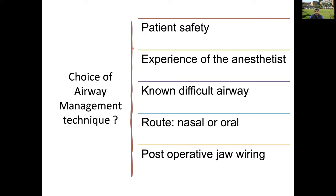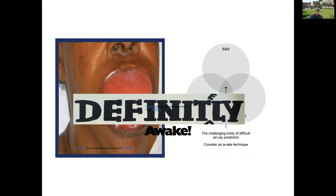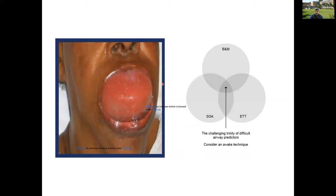We need to make a plan depending on experience and patient safety, and keep in mind whether the patient will have post-operative jaw wiring. The three important safe zones are: the ability to bag-mask ventilate, the ability to place a supraglottic airway, and the ability to perform endotracheal intubation. If none of these is possible, the patient must definitely be done awake. As shown in the picture, a large intraoral mass where bag-mask is difficult and SGA/ETT cannot be inserted — these patients should definitely be done awake.